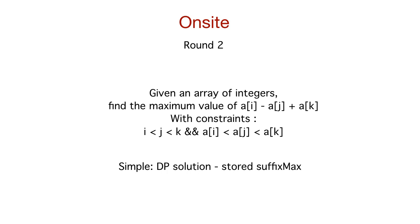In round two, I was given an array of integers and asked to find the maximum value of a[i] − a[j] + a[k]. I used a suffix max array — you can call it a DP solution. It was quite easy. I'm not going to discuss the full solution in this video, but feel free to comment if you have doubts or know the solution, so it benefits other viewers.